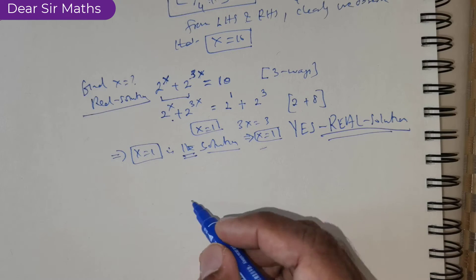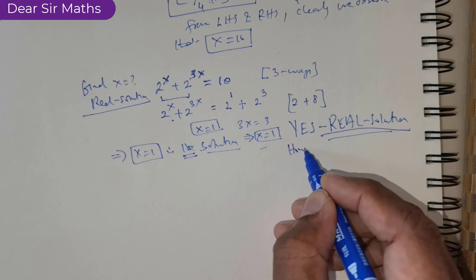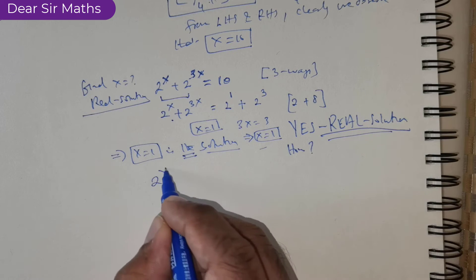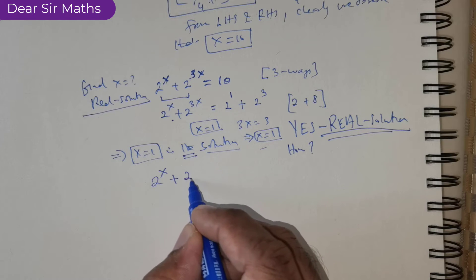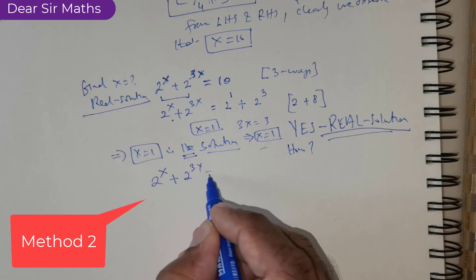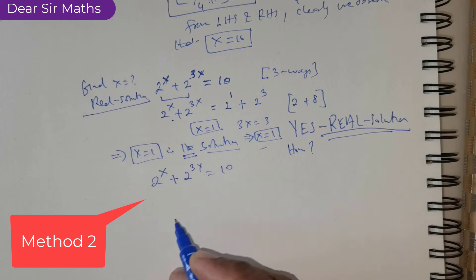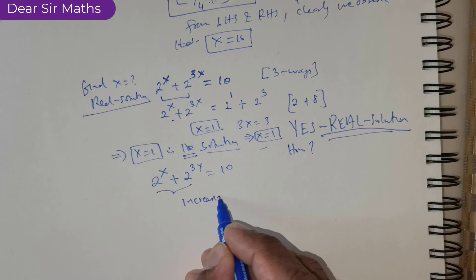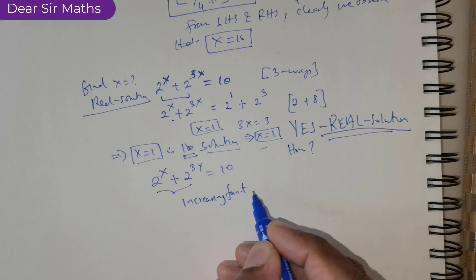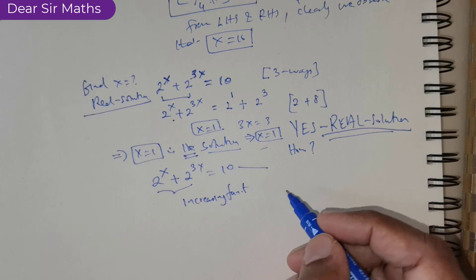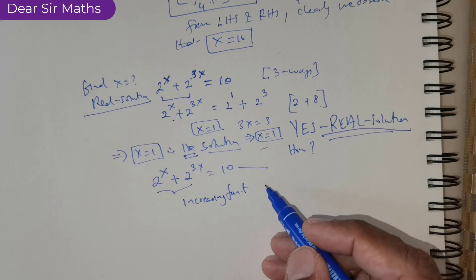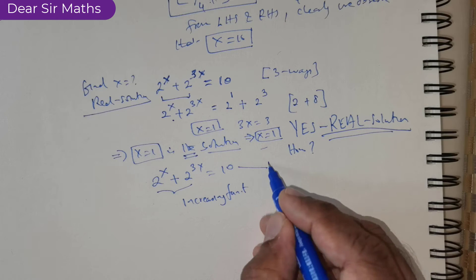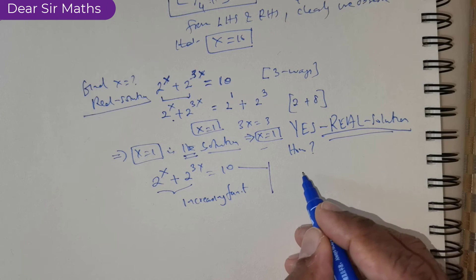There are people who will be asking how do you know that x equal to 1 is the real solution? Simple. Consider what is given: 2 raised to the power of x plus 2 raised to the power of 3x is equal to 10. Now the left side is an increasing function, and the right side is a constant function. You are asking about an increasing function intersecting a constant, and that is only possible at one particular point.